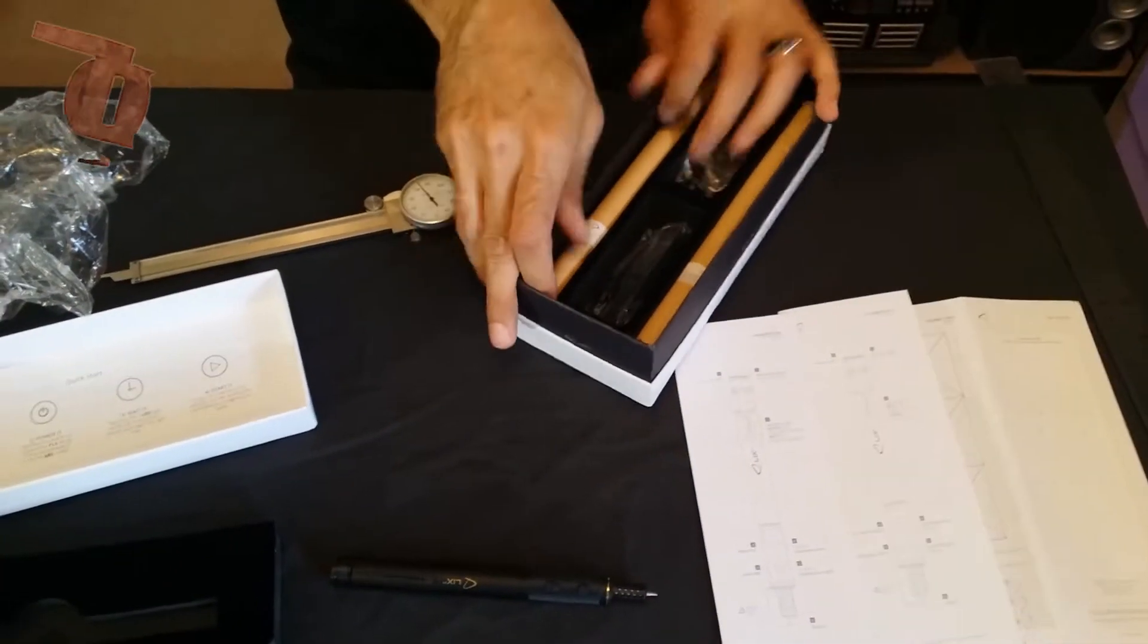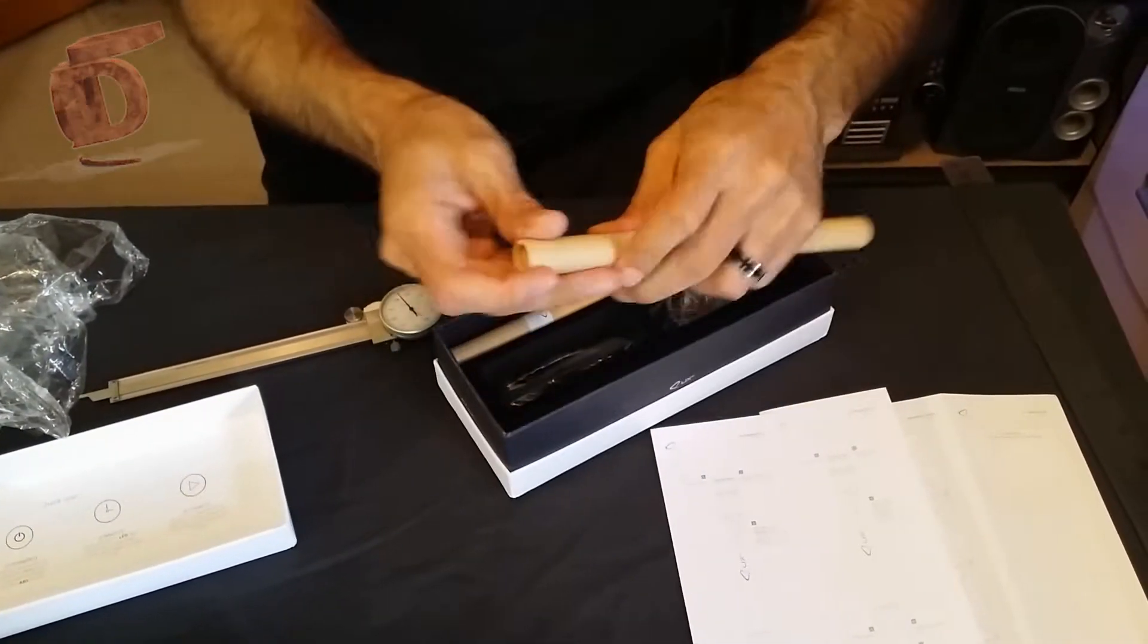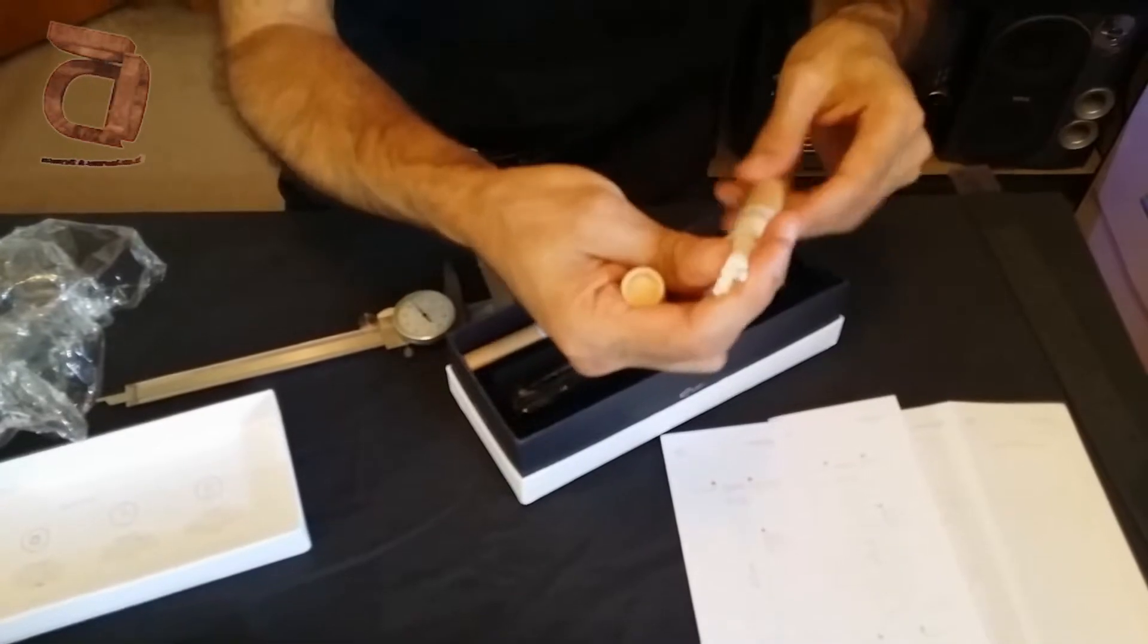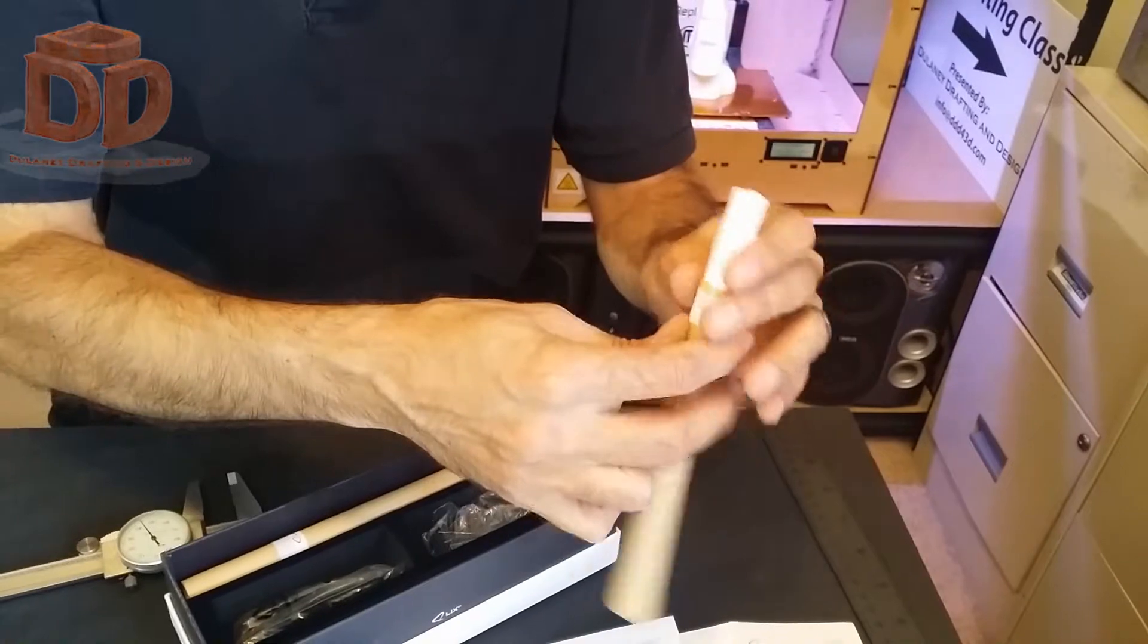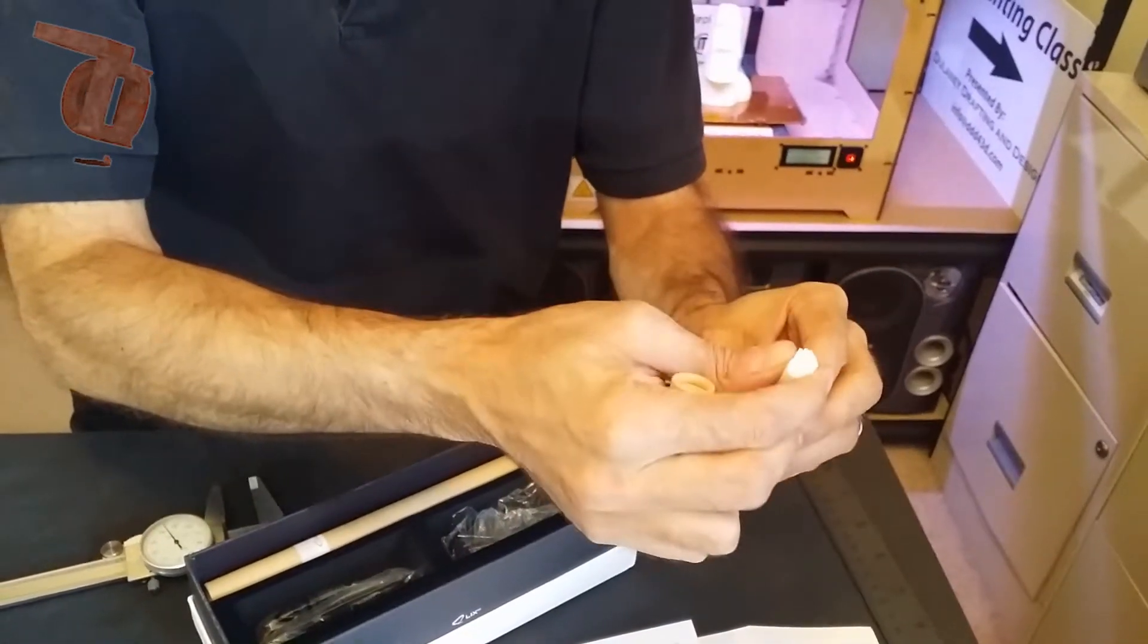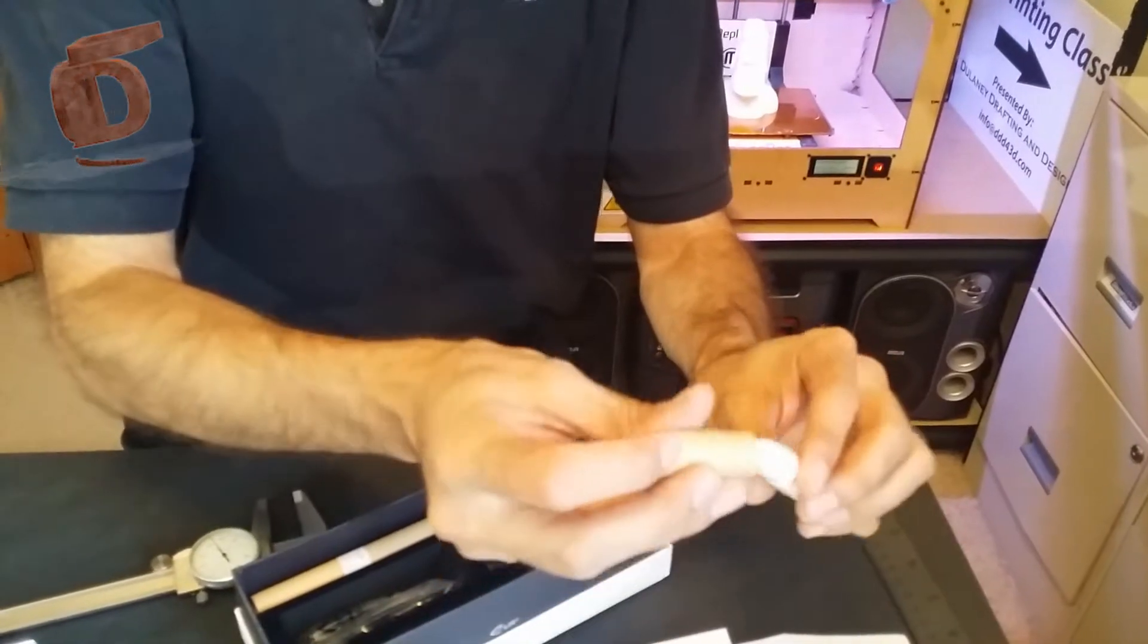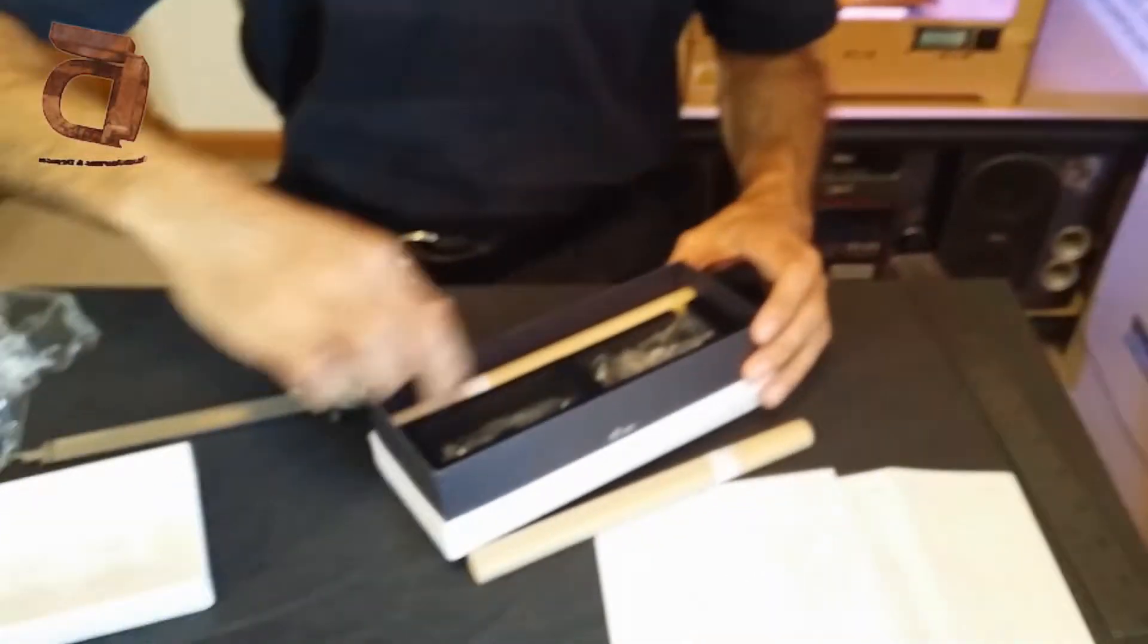Now we've got looks like two tubes of filament rods. Here is just a white. This says it's PLA white filament. Now these are in the tubes, they have 40 per tube and they're the 1.75 millimeter diameter. So that's a bunch of white PLA.